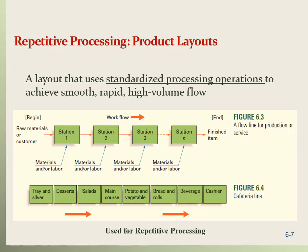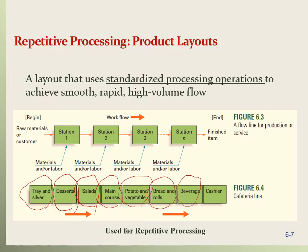A good example is a cafeteria line. The first station is where the customer gets a tray and silverware. The next station might be desserts, then salad or main course, then potatoes and vegetables, then breads and rolls, then beverages, and finally the cashier. Every customer follows this repeated process — they may skip a station if they don't want a particular item, but the overall flow is sequential. This is a repetitive process and a product layout.